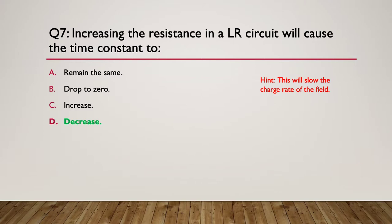So what will happen to the constant itself though? In this case it will decrease the constant. So increasing resistance will decrease the time constant because it's an inverse relationship.